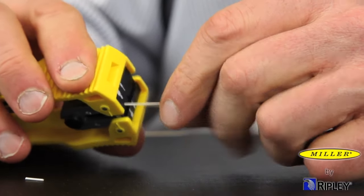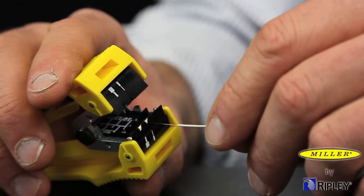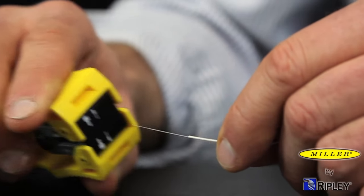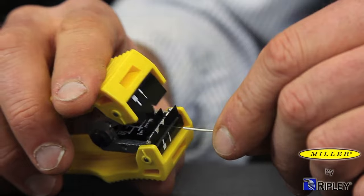The tool is designed with three fiber stripping stations: jacket, 900 micron, and 250 micron.